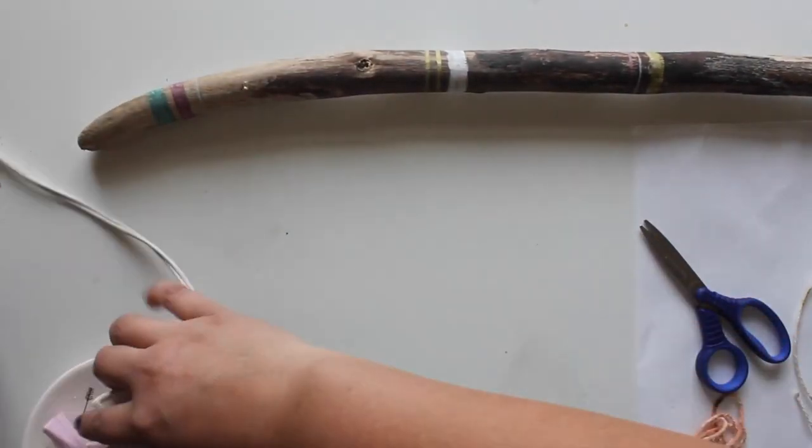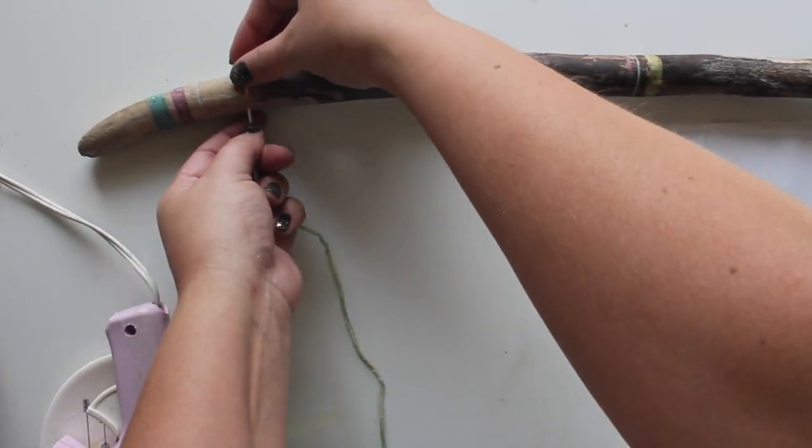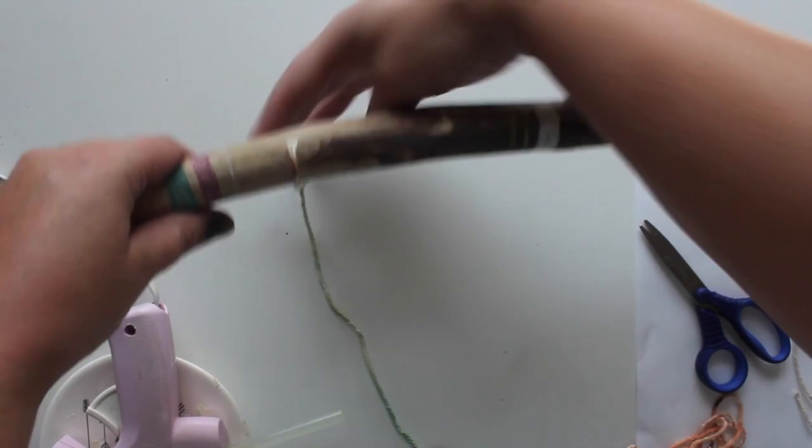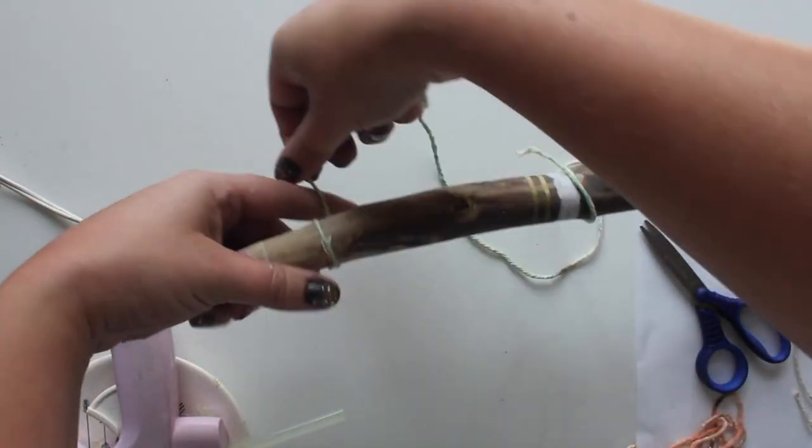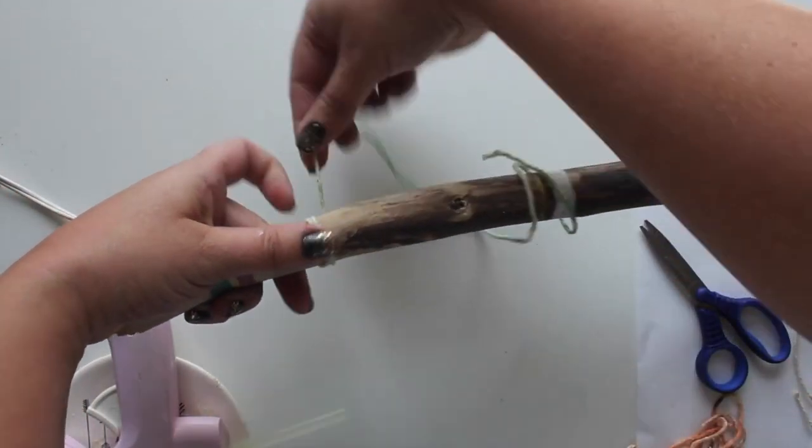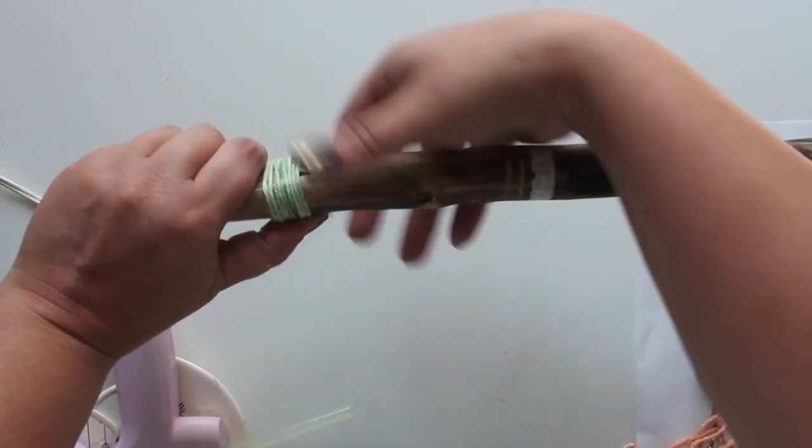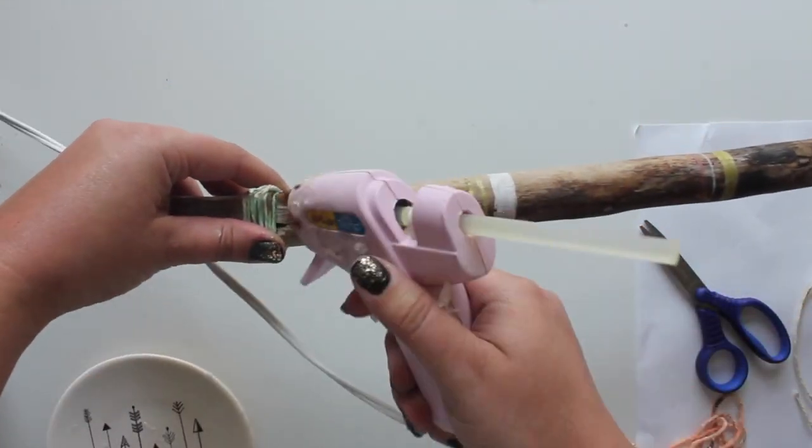Once the yarn has dried, you can add a dot of hot glue to secure the end, then wrap the yarn tightly. Add another dot of hot glue to hold the loose end in place.